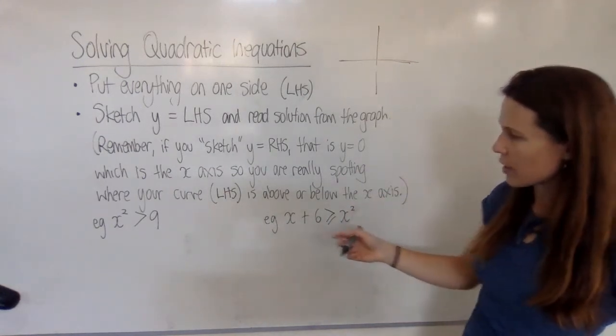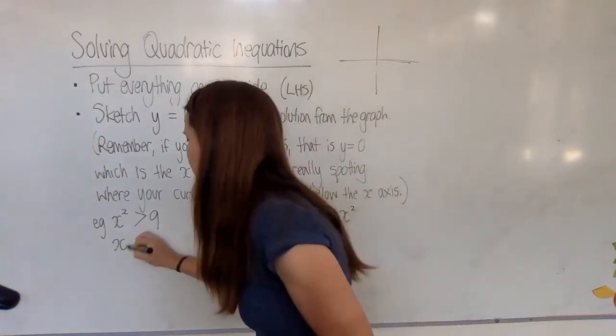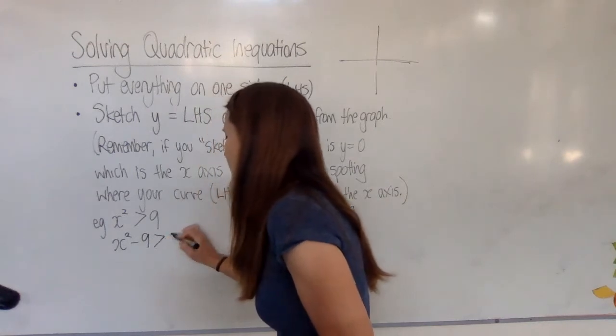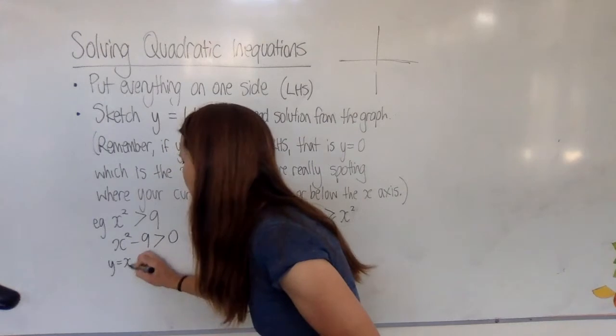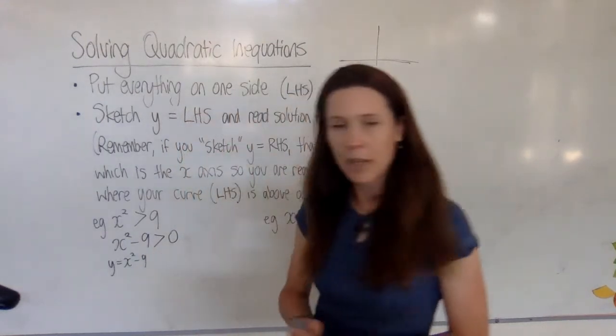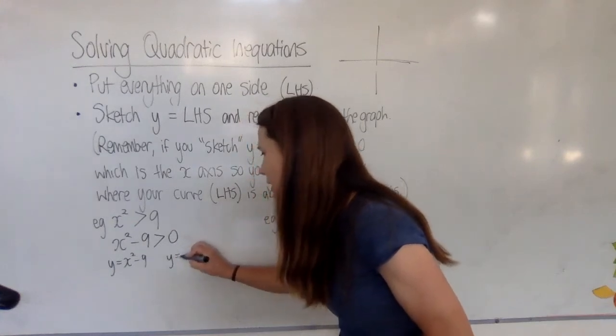So two simple examples here. Put everything onto the left-hand side—let's subtract 9 from both sides here. Now what we want to do is graph y equals x² minus 9, and we want to see where that is sitting above y equals zero.